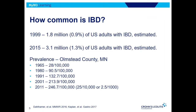So how common is IBD? It's actually become more common. In 1999, 128 million people had it. Now about 1.2% of the population, or 2.1 million people, have it. Olmstead County is where Mayo is, so a lot of our research comes out of Olmstead County and Mayo. You can see the prevalence since 1965 has steadily increased all the way up to 2011, and it's even higher now.